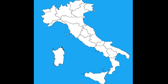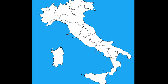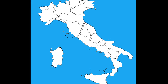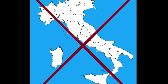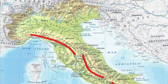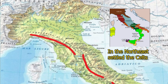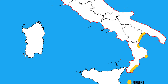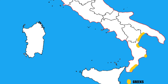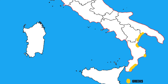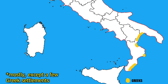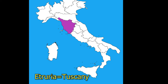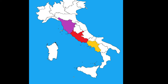The borders of today's Italy, or even of the Roman Empire in the late Republic period, are not exactly the borders of ancient Italy. At that time the northern border was not the Alps, but the Apennines. After a few centuries the Italians conquered the whole country. Etruria, Lazio, and Campania formed the Italian heartland.